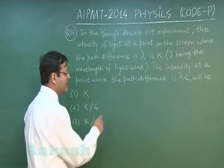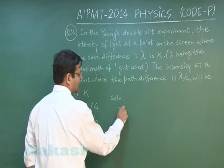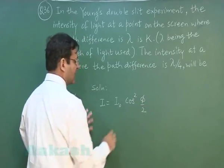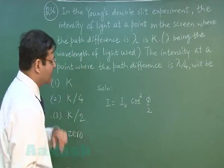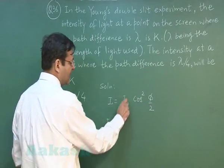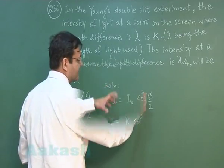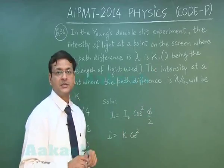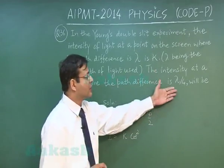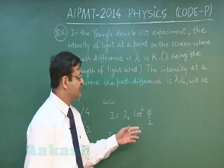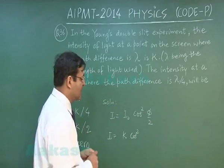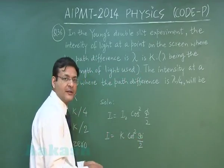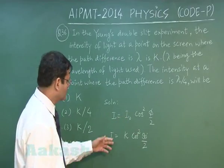This is a direct formula-based question. You can use the expression I = I_naught cos²(φ/2). Here I_naught is given as k, and φ is the phase difference to be calculated from the path difference. A path difference of lambda by 4 is equivalent to 90 degrees of phase difference. So φ/2 = 45 degrees, and cos²(45°) = 1/2.